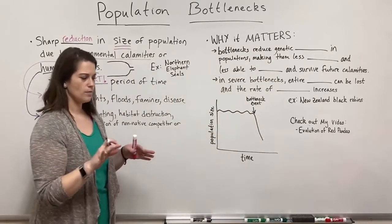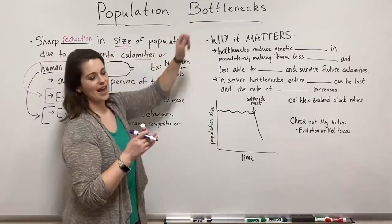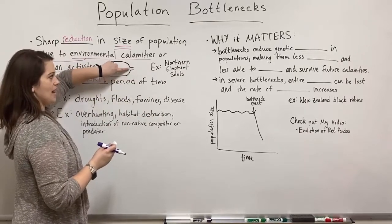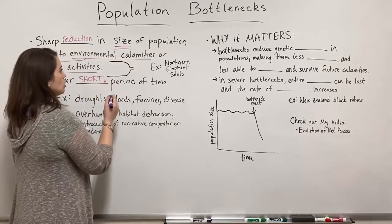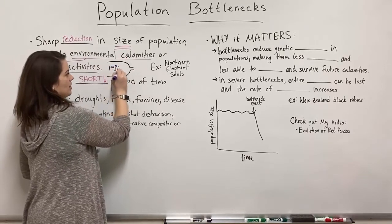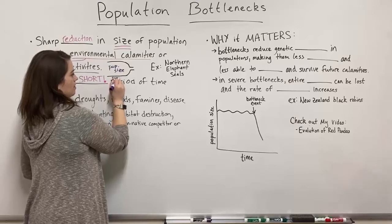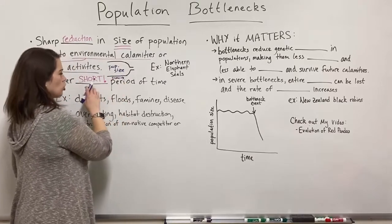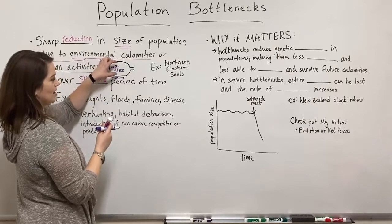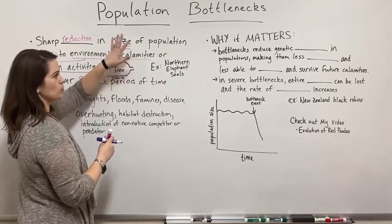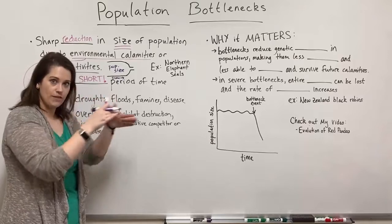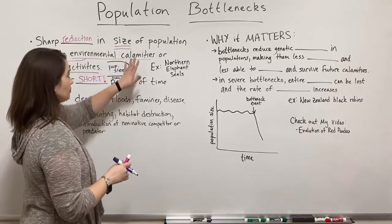Before we go on to why this matters, I want to explain where we get the name 'bottleneck.' Think of the neck of a bottle — imagine a two-liter bottle laying on its side with the neck and opening. The size of the bottle represents population size and the horizontal axis represents time. There's a sudden decrease in population size over a short period of time, going from a large population size down to a very small one. That's why it's called a population bottleneck — imagine a population being cut down until it fits through the bottleneck in much smaller numbers.